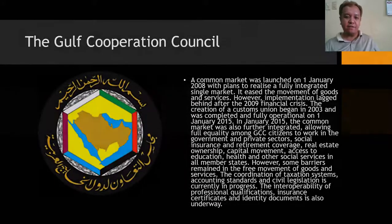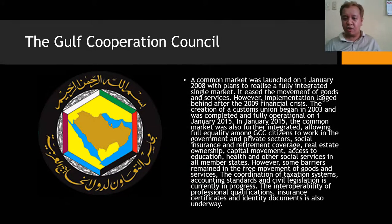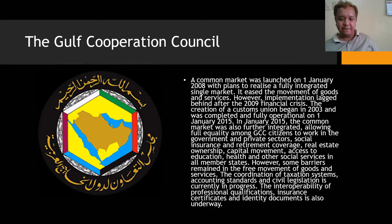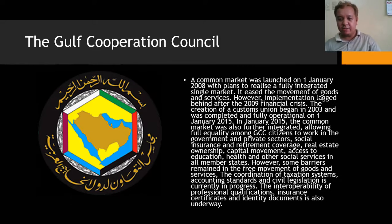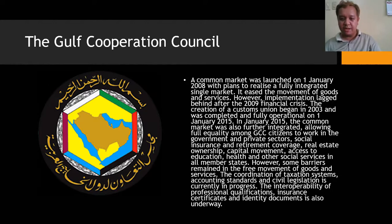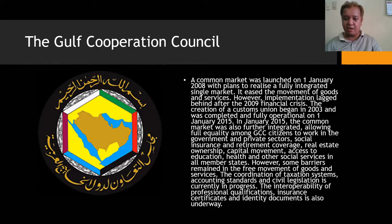In the Middle East, you have the Gulf Cooperation Council, a common market launched on January 1, 2008, with plans to realize a fully integrated single market. The creation of the customs union began in 2003 and was fully operational by January 1, 2015. In January 2015, the common market was further integrated, allowing full equality among GCC citizens in the government and private sectors, including social insurance, retirement coverage, real estate ownership, capital investment, and access to education, health, and other social services in all member states.